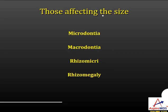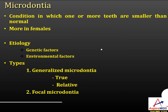Now let us see anomalies that affect the size of the tooth. These include microdontia, macrodontia, rhizomicria, and rhizomegaly. Microdontia is the condition in which one or more teeth are smaller than normal. It is mostly seen in females. The etiology can be genetic or due to environmental factors.